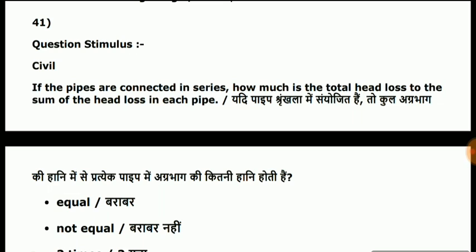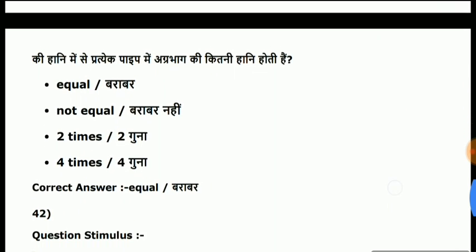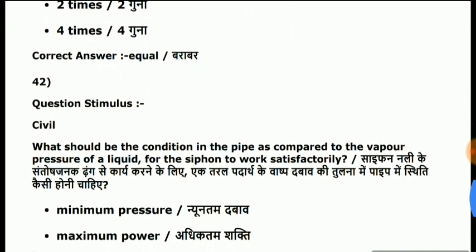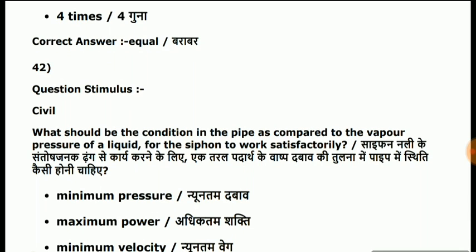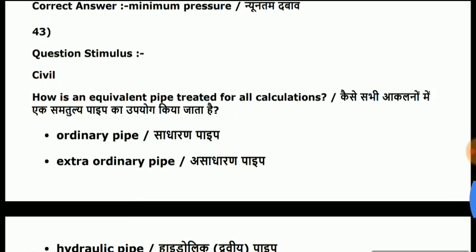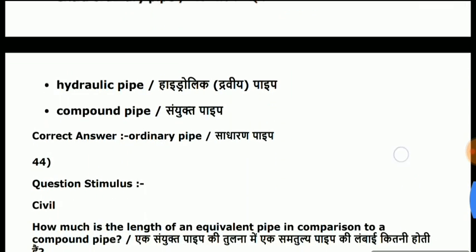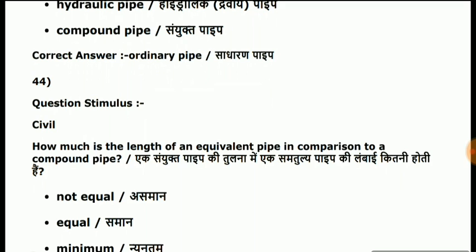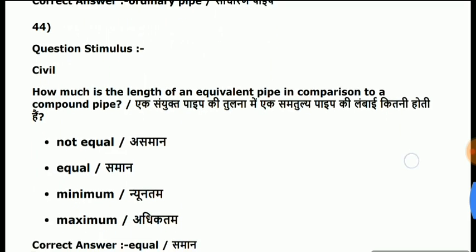Question 41: if the pipes are connected in series, how much is the total head loss equal to the sum of the head loss in each pipe? Answer is equal. Question 42: for the siphon to work satisfactorily, what should be the condition of pressure in the pipe as compared to the vapor pressure of a liquid? Answer is minimum pressure. Question 43: how is an equivalent pipe treated for all calculations? Answer is ordinary pipe. Question 44: how much is the length of an equivalent pipe in comparison to a compound pipe? Answer is equal.